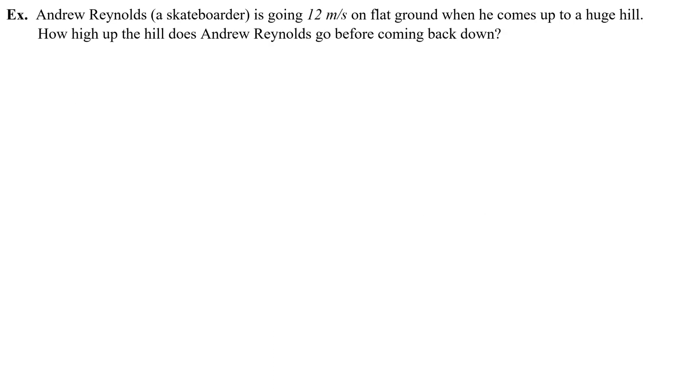Andrew Reynolds, a skateboarder, is going 12 meters a second on flat ground when he comes up to a huge hill. How high up the hill does Andrew Reynolds go before coming back down? I'm going to draw this with a box because it is a very common problem on the AP test where a box is shot up to some hill, and you have this initial velocity V₀, 12 meters a second, and they want you to figure out what is the height to which it rises, assuming that the initial height is zero.